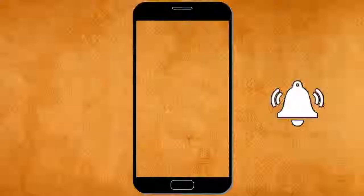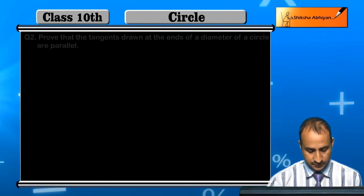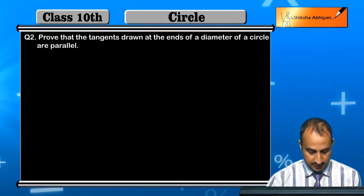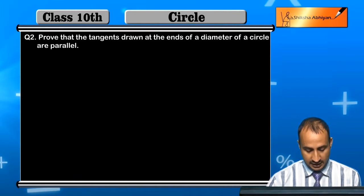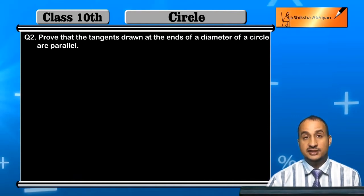Now we will solve question 2. Question 2 is: prove that the tangents drawn at the ends of the diameter of a circle are parallel.